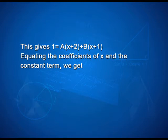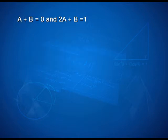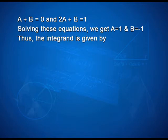This gives 1 = A(x+2) + B(x+1). Equating the coefficients of x and the constant term, we get A + B = 0 and 2A + B = 1. Solving these equations, we get A = 1 and B = -1.